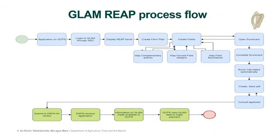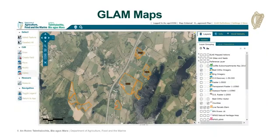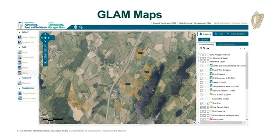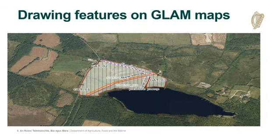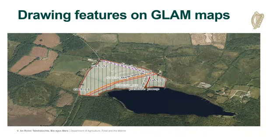For those who haven't seen GLAM before: you can see the parcels on screen, with different layers on the right-hand side that can be switched on and off, and editing tools on the left. When you zoom in on a parcel you can draw or create a field. There's a before-and-after example where someone has drawn a new hedgerow, some water piping, three gates, and fencing.